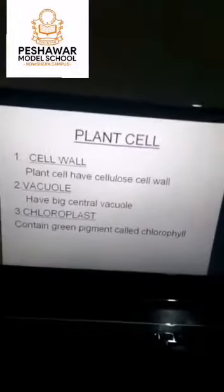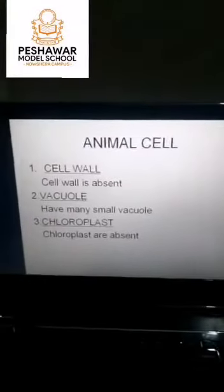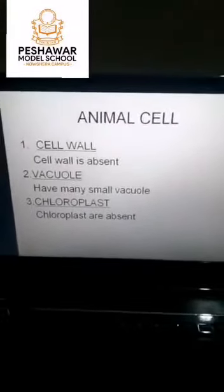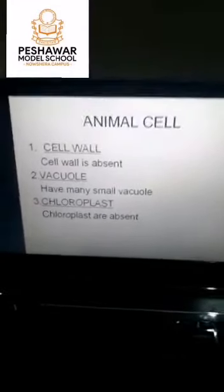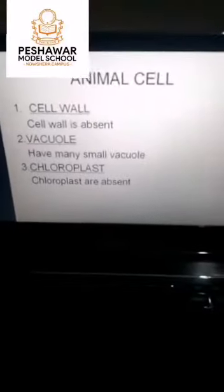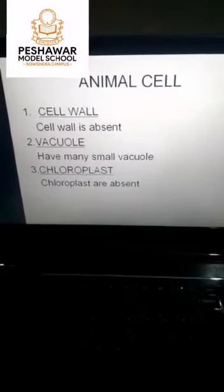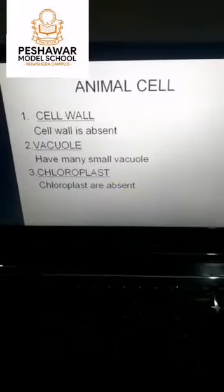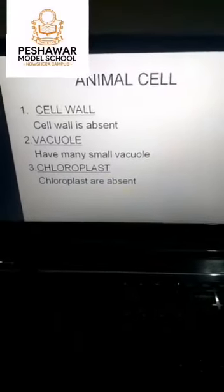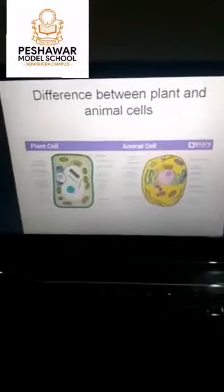Now, the structure of the animal cell. Cell wall is absent in animal cells. Animal cells have many small vacuoles, while in plant cells there is only one big vacuole. Chloroplasts are also absent in animal cells because animals cannot make their own food, so animals do not need chloroplasts.